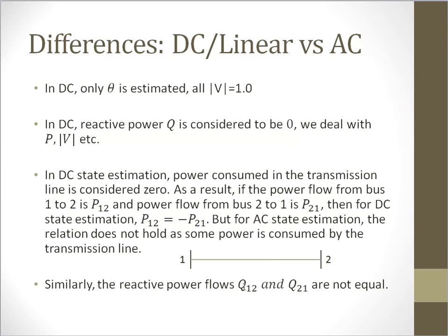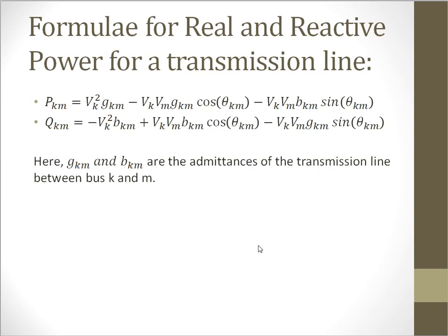So these are the formulas for real and reactive power of a transmission line. These are the two basic state equations for state estimation. This relates the state variables with the measurements. These are the power flows of the transmission lines.